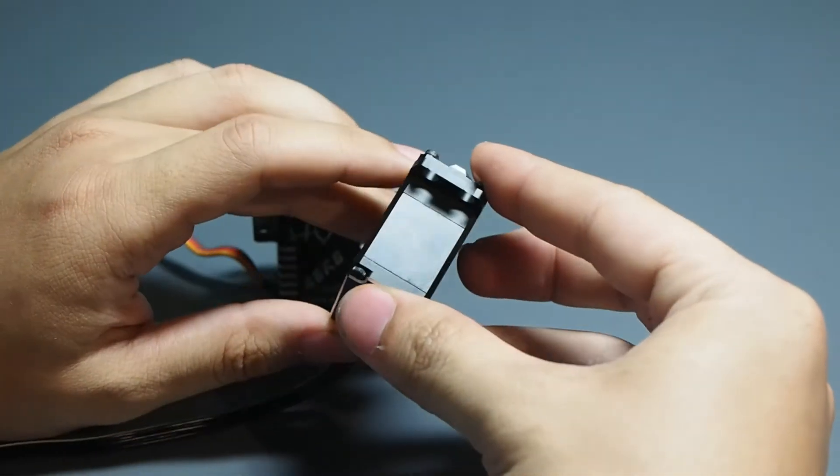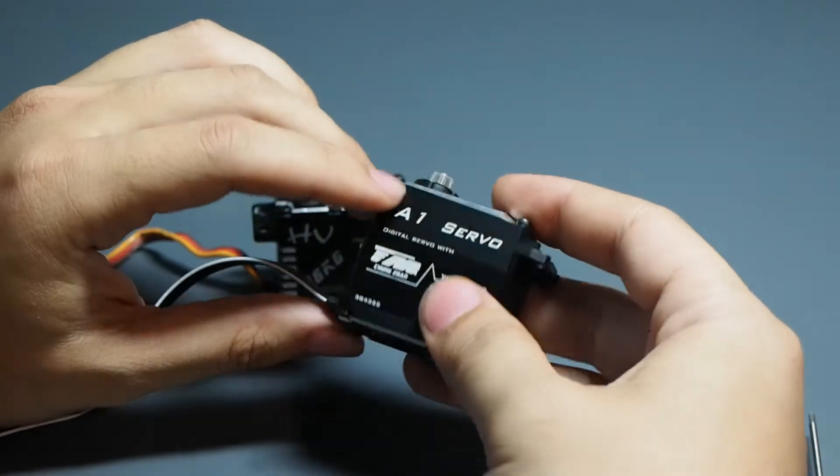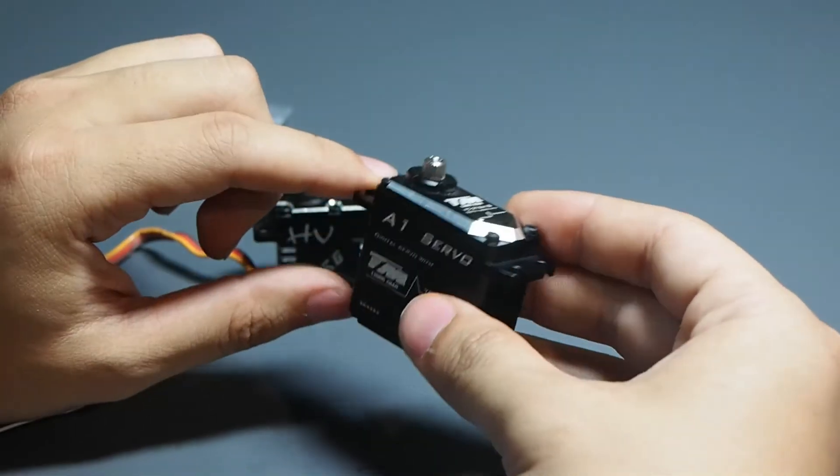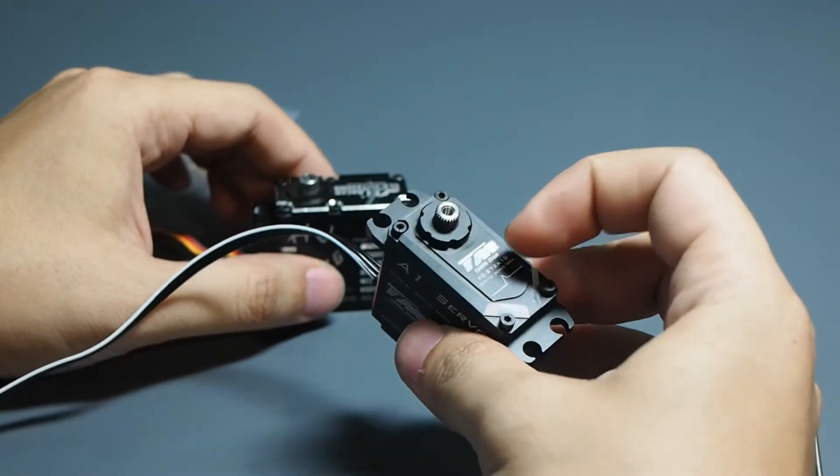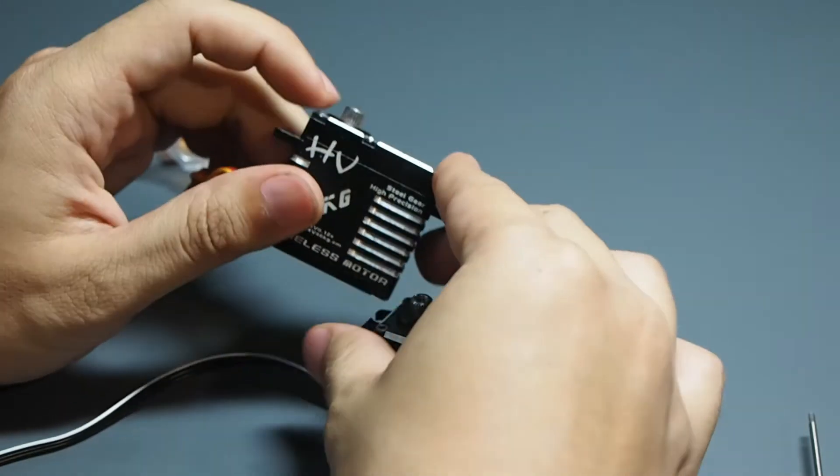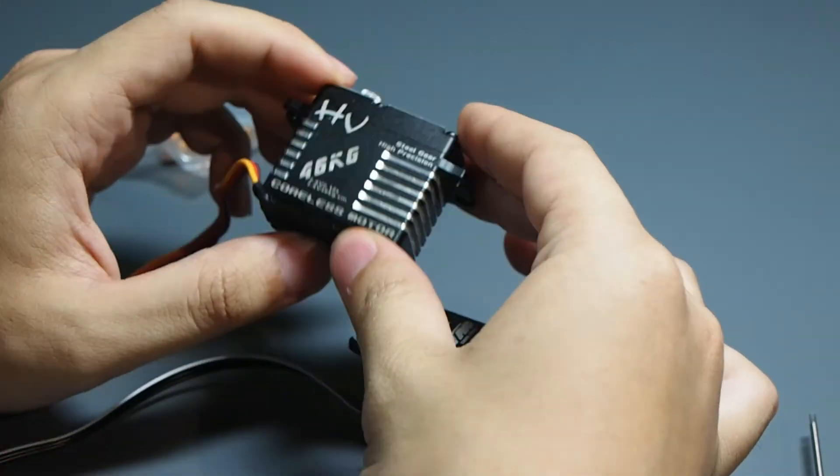So overall case impressions, both are very nicely thick aluminum. This one has more like chamfered edges, so it looks a little bit nicer and obviously with my custom logo, I like it more. But no complaints for this one.